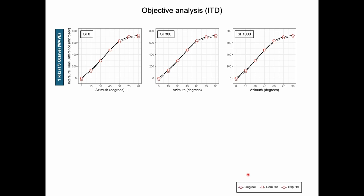These are the results of objective analysis for interaural time difference. The circle symbol indicates the original signal, square is for commercial hearing aid, and diamond symbol is for broadband filtering condition. The first panel is for SF0, SF300, SF1000.